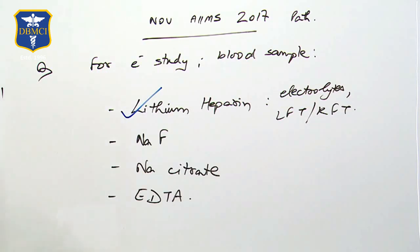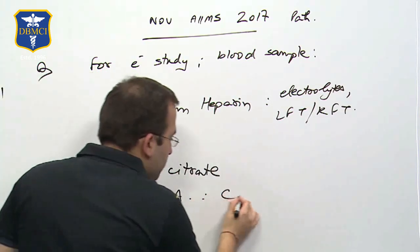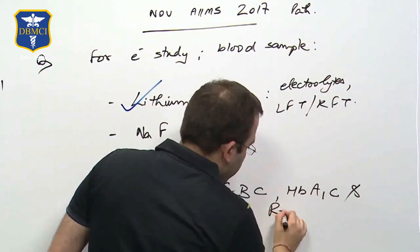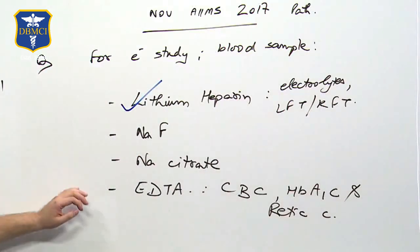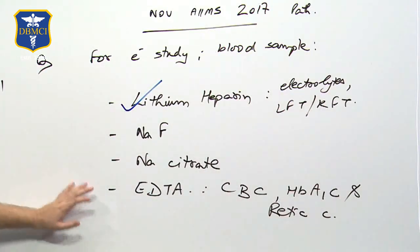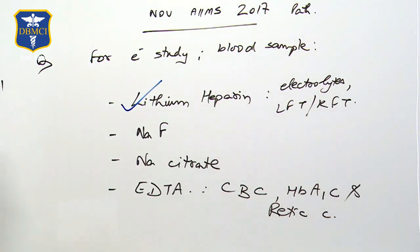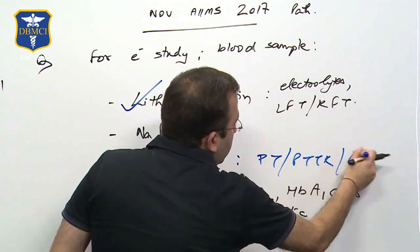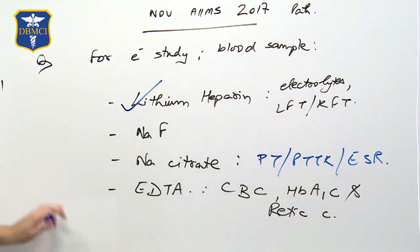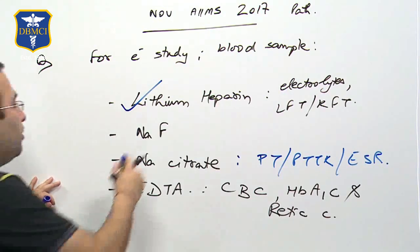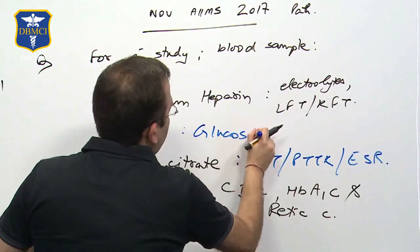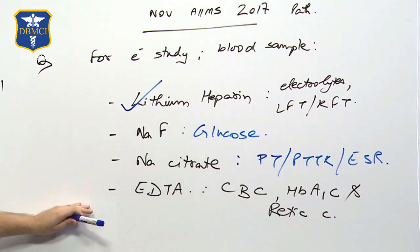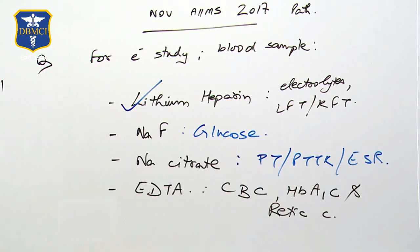EDTA, as you know from your internship days, is used for CBC, complete blood count, Hb A1c, and reticulocyte count. Sodium citrate is used for coagulation tests — PT, PTTK, and ASR. Sodium fluoride is for glucose estimation. So the only one left was lithium heparin, which was the answer by default.